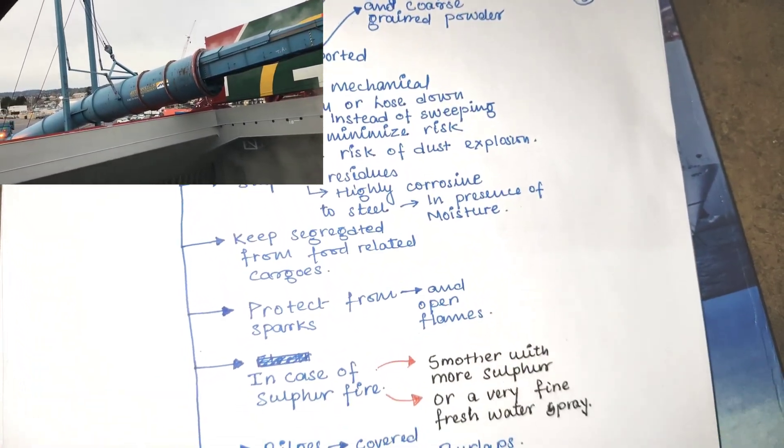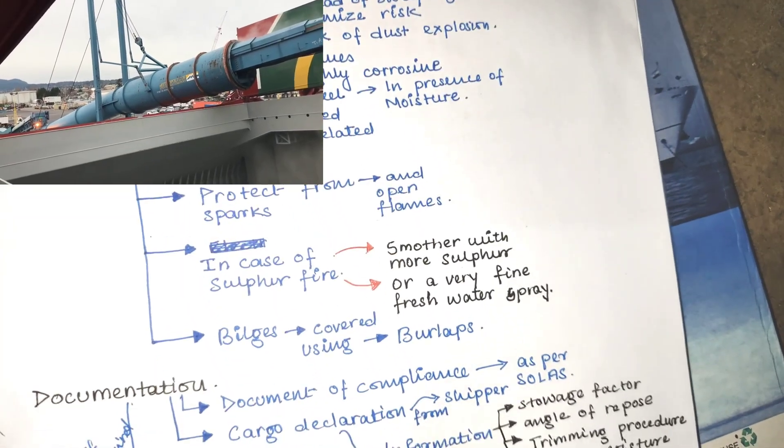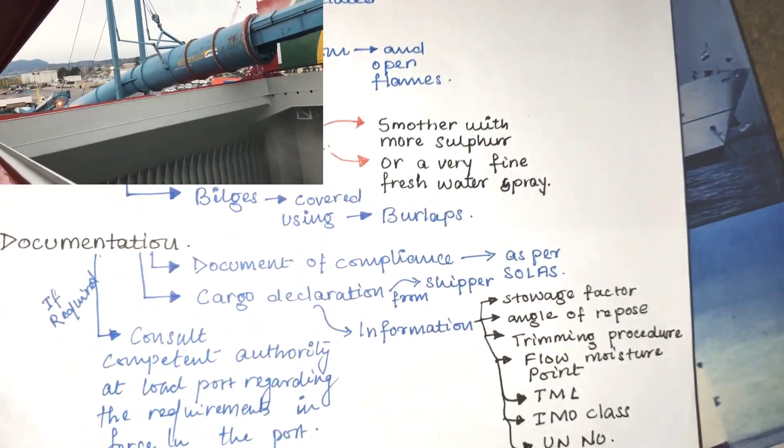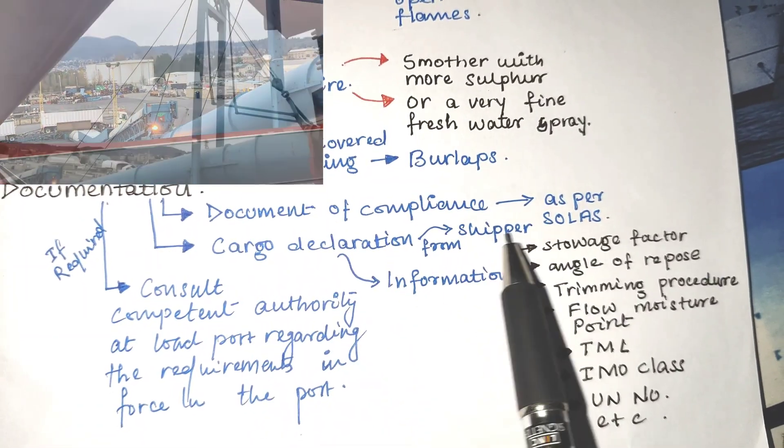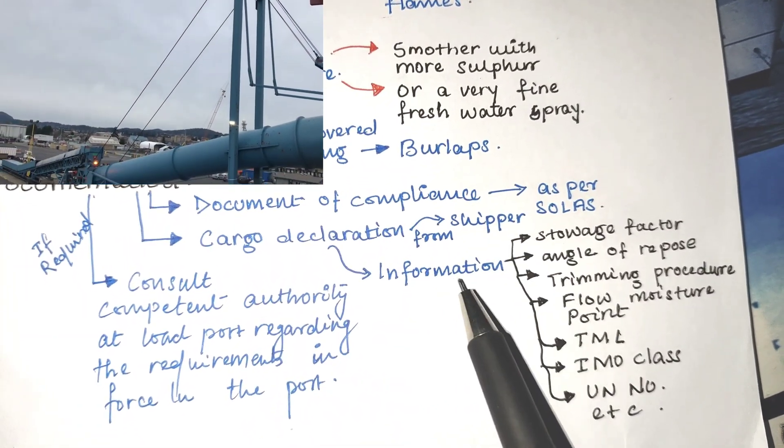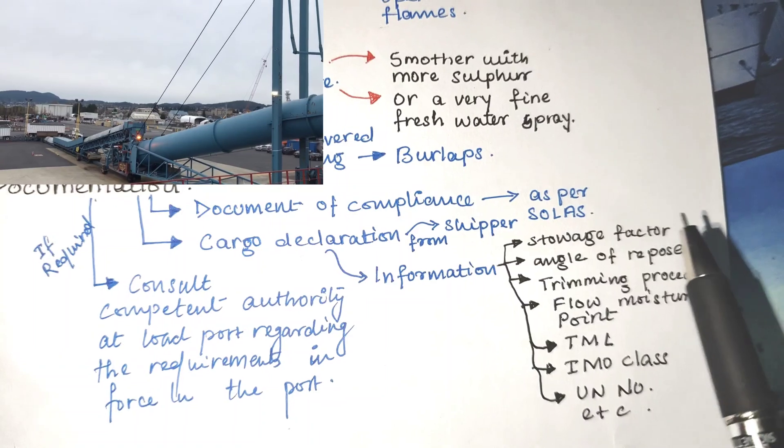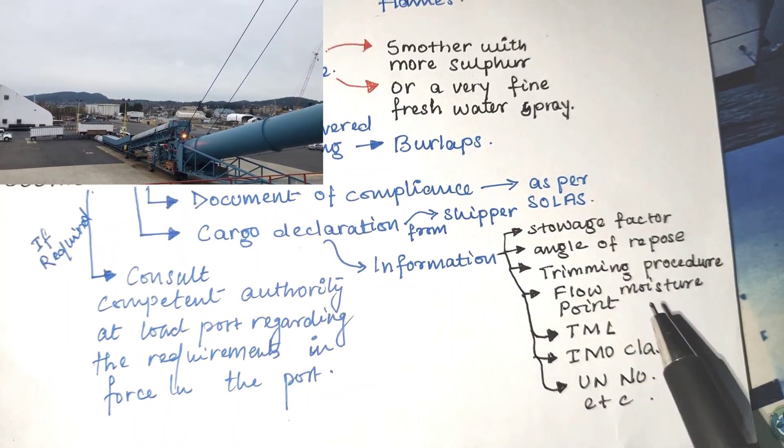Now going to the documentation part of sulfur as a bulk cargo. We have document of compliance as per SOLAS, then cargo declaration from the shipper, and information it contains such as stowage factor, angle of repose, trimming procedure, flow moisture point, TML, IMDG class, UN number, etc.